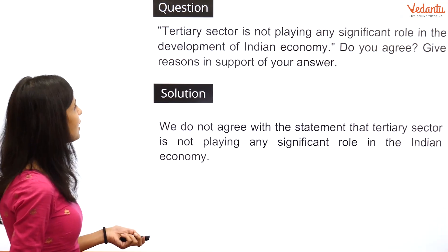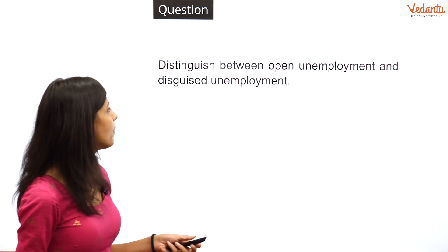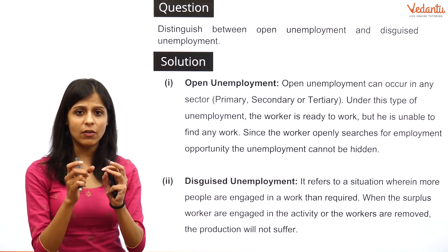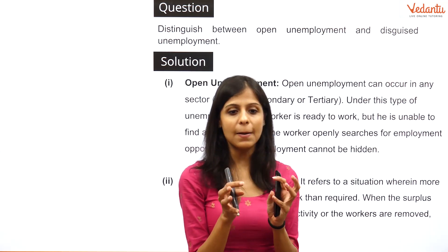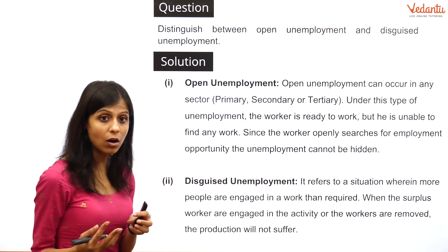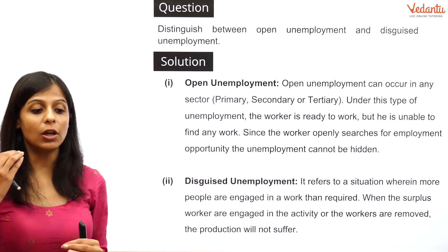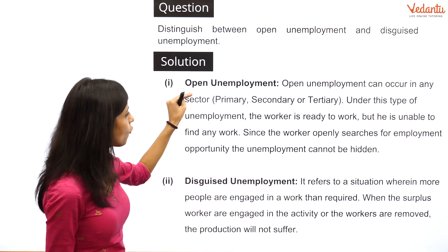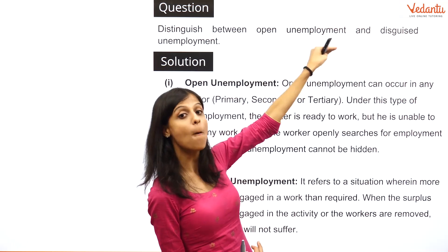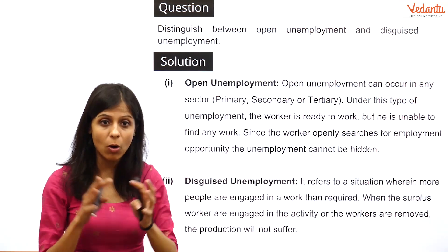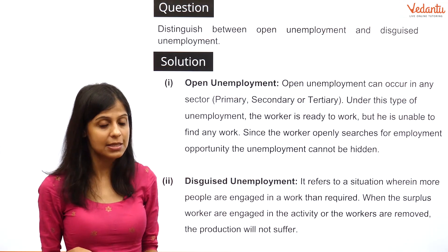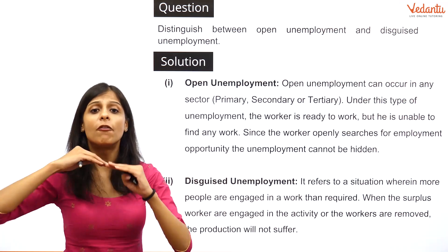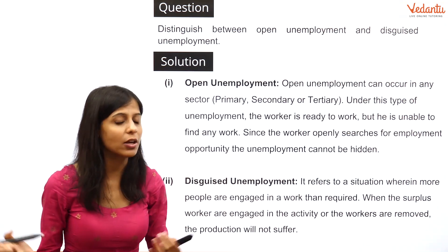The next question is: distinguish between open unemployment and disguised unemployment. First define unemployment — it is when you are willing to work but are unable to get a job. Open unemployment is where a worker is ready to work but unable to find any work; it can occur in any of the three sectors — primary, secondary, or tertiary.